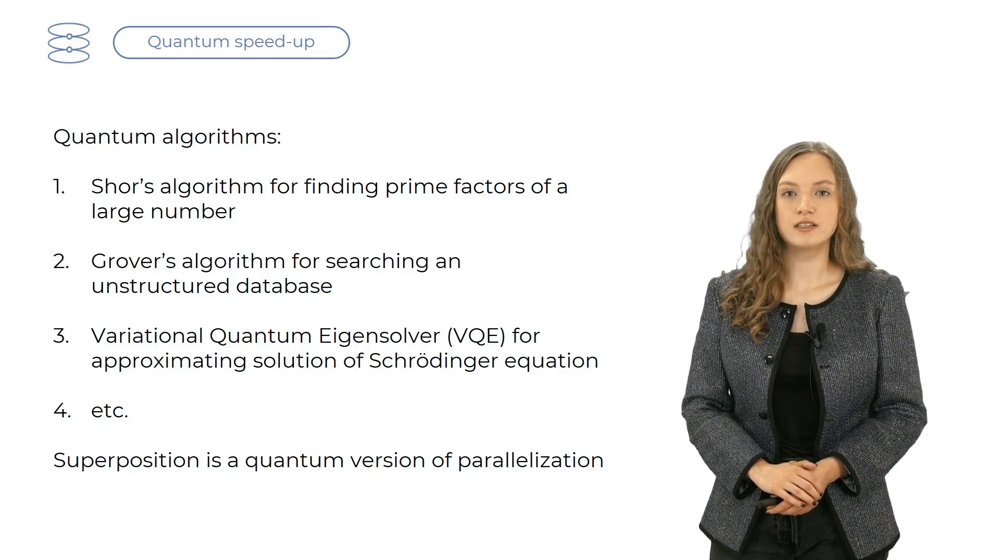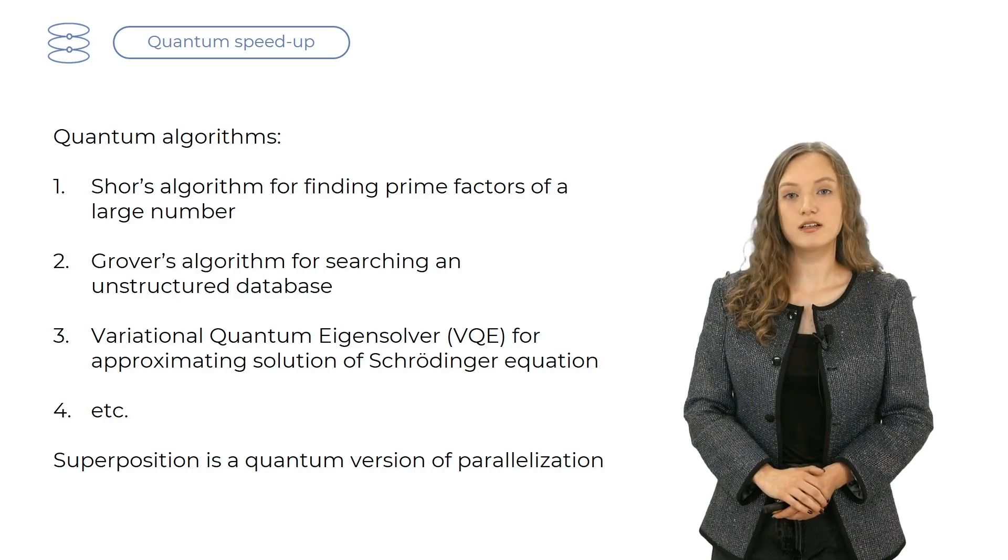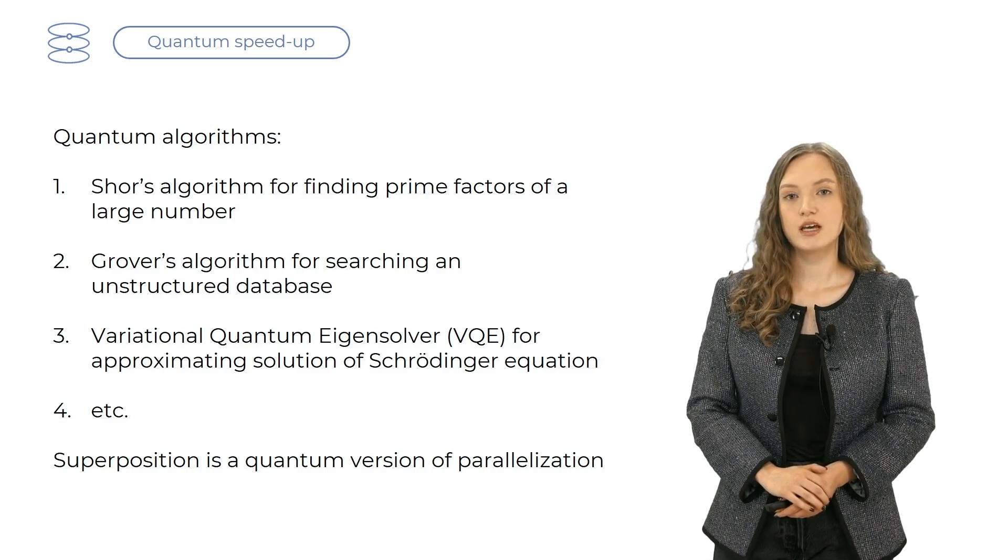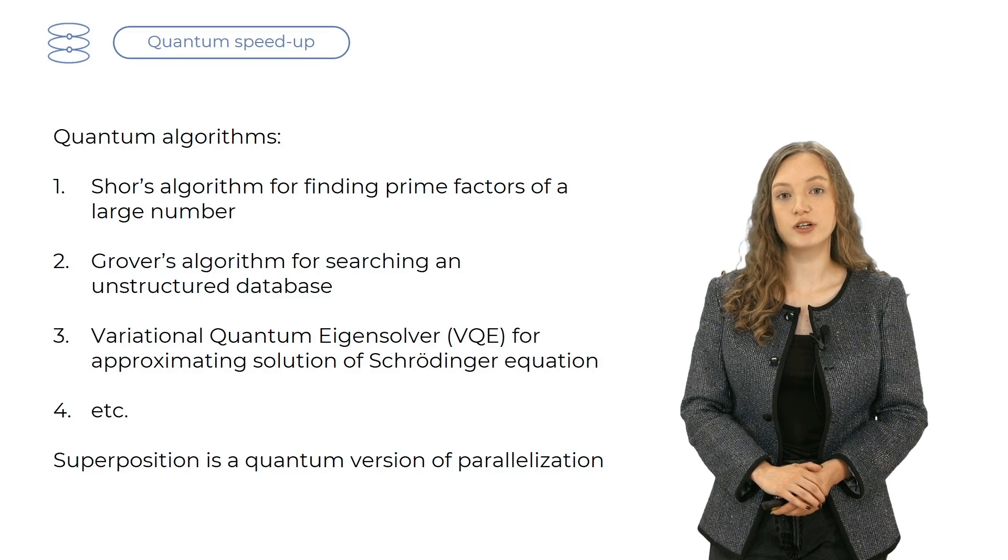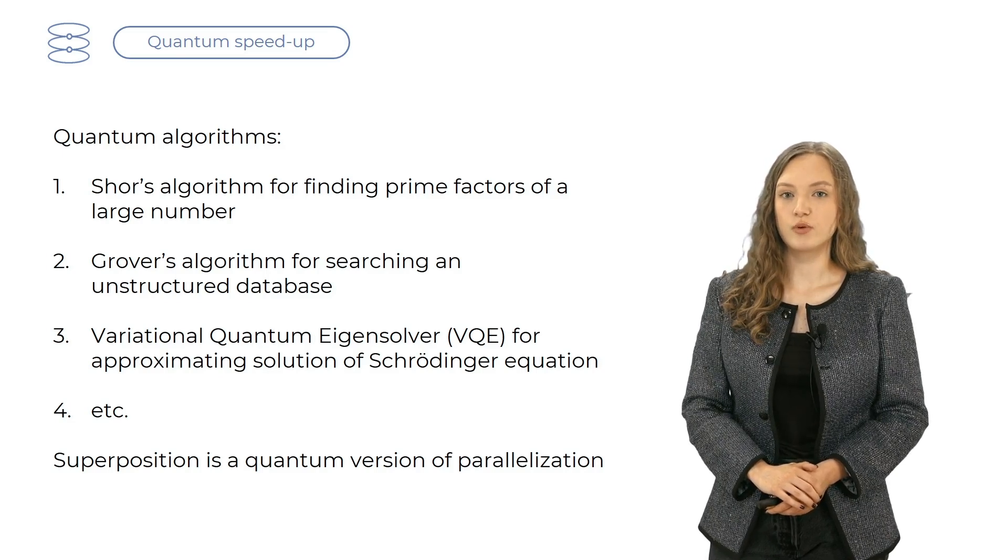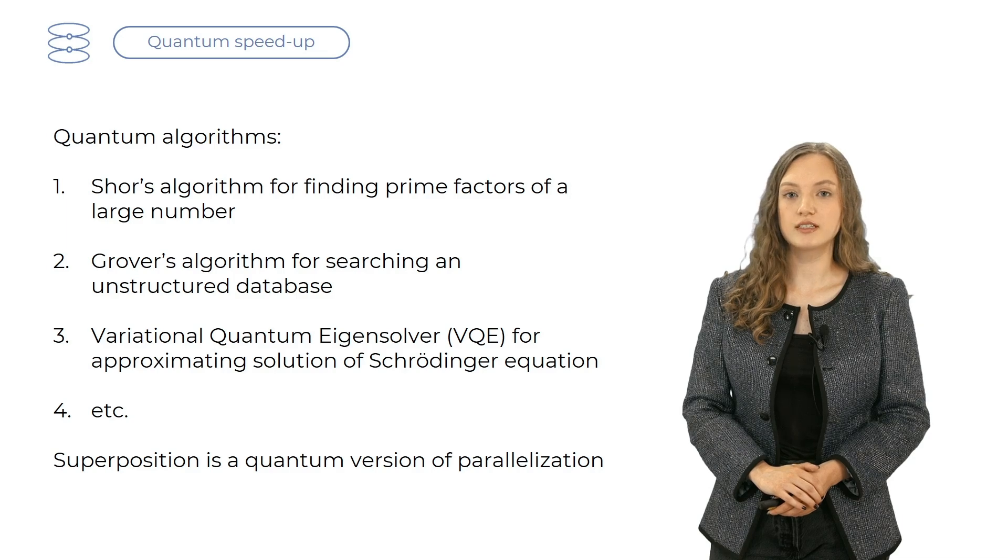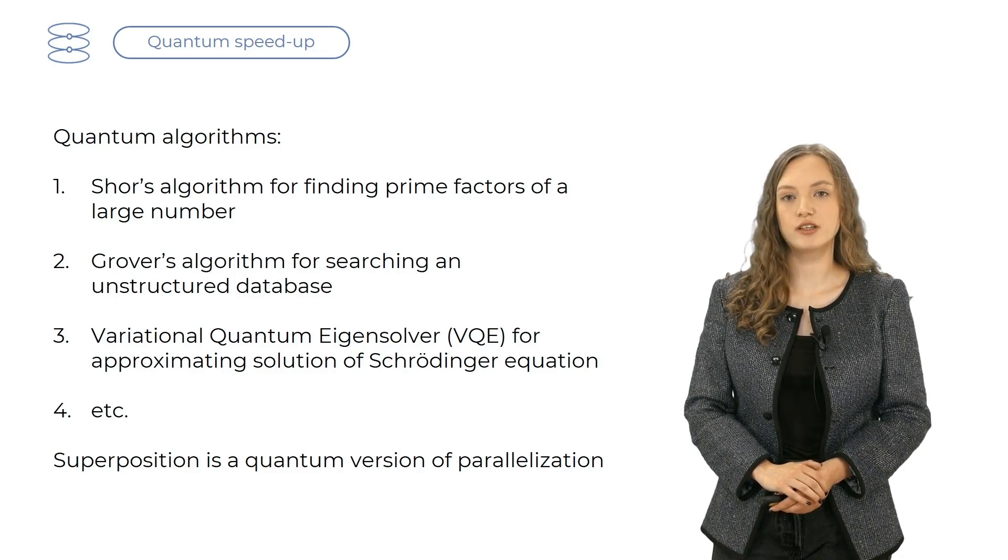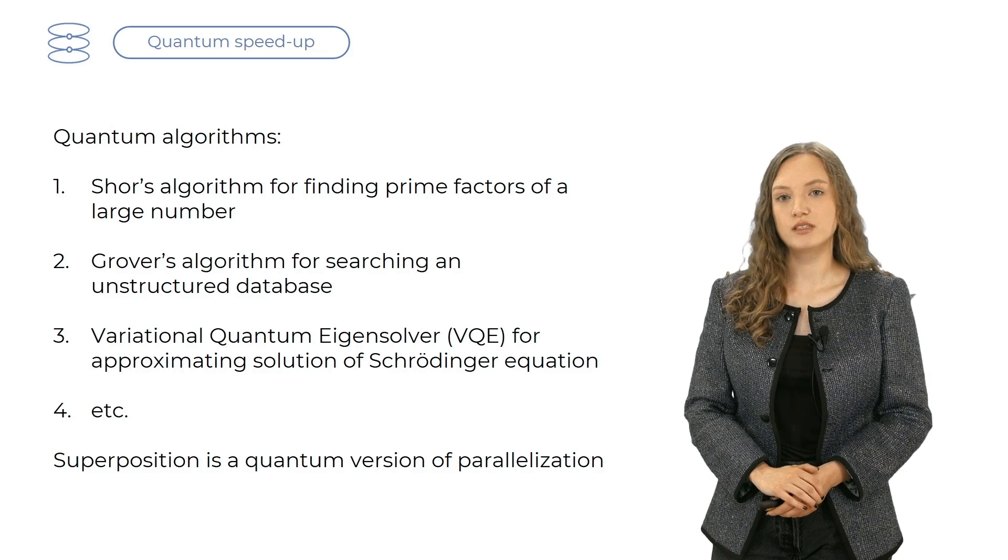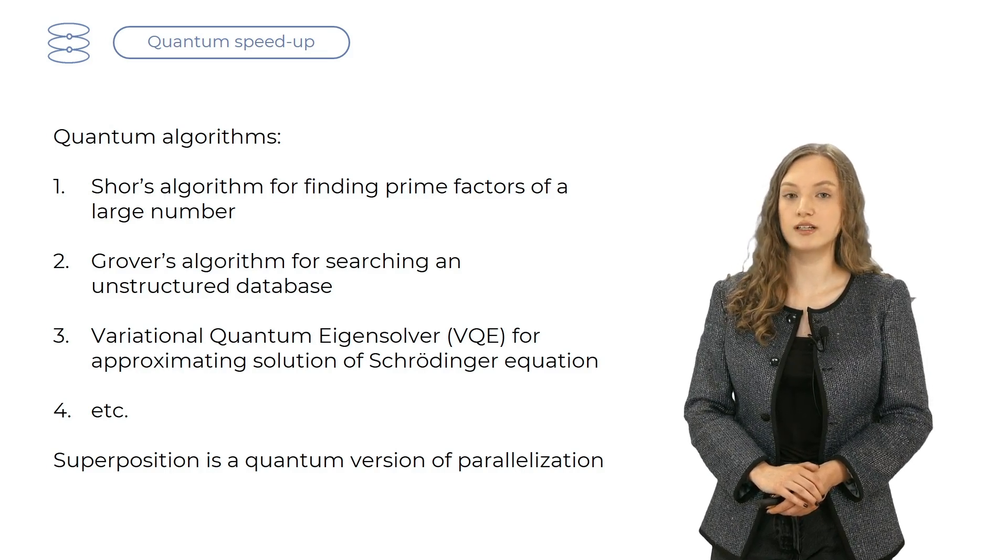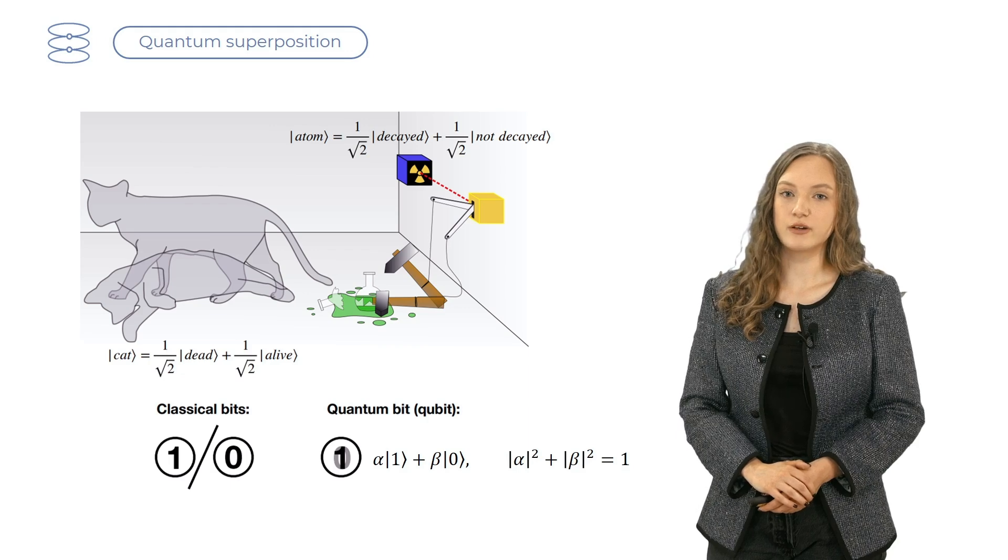For example, Shor's algorithm for finding the prime factors of a large number is exponentially faster than the classical analog. Grover's algorithm for searching an unstructured database provides a quadratic speedup. The variational quantum eigensolver allows efficient approximation of Schrödinger equation solution, which is useful for quantum chemistry. These speedups are due to the ability to utilize quantum effects called superposition and entanglement. For example, superposition allows a system to effectively be in more than one state at the same time, which in terms of computation means that we can process several streams of data in parallel instead of one at a time.